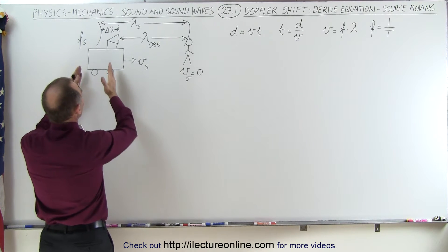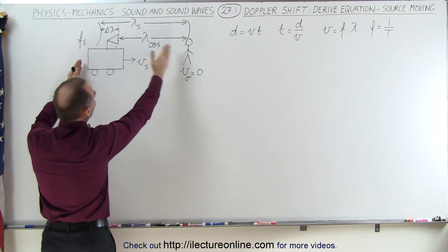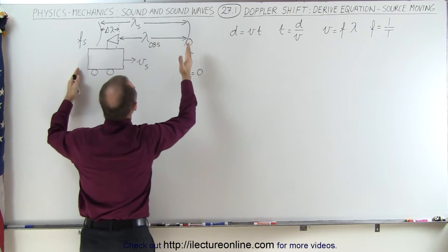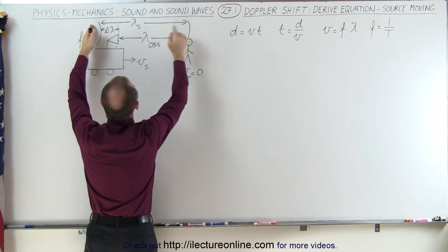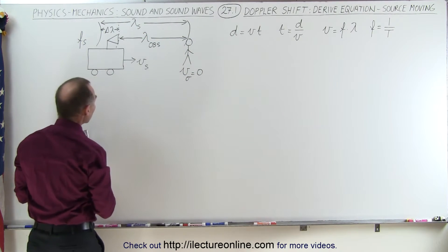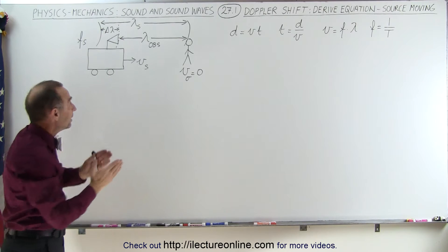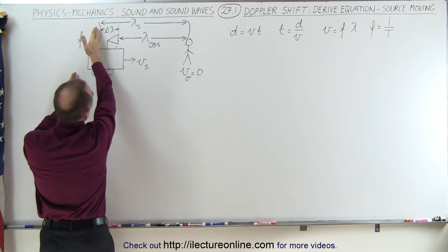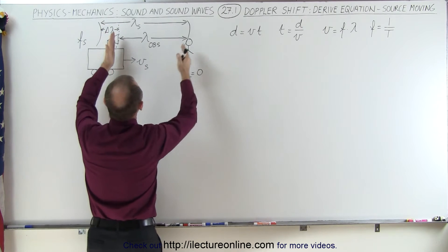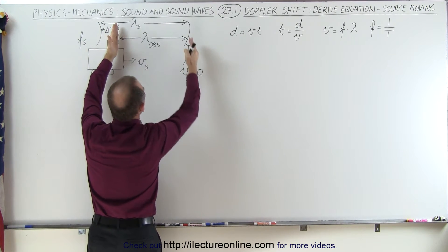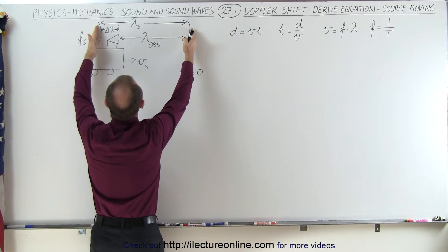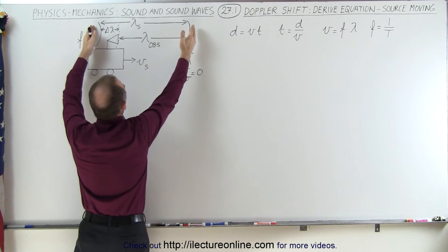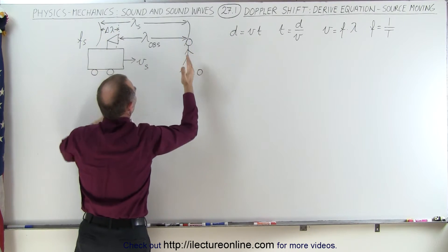As the source is putting out sound waves — a wave going to the observer, another wave going to the observer, and so forth — the distance between them would be the wavelength of the source. Since the source is moving, before the next sound wave is put out, the source will have moved from this position to this position, so the wavelength observed by the observer is only this long, while the initial wavelength from the source is this long.